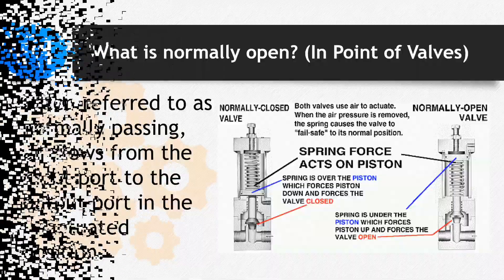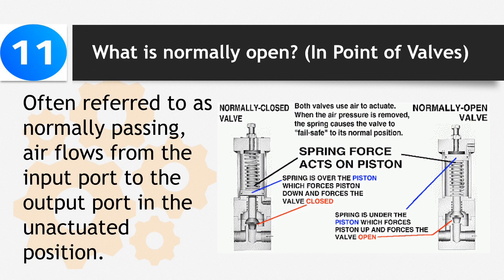Number 11: What is normally open? In point of valves, often referred to as normally passing, air flows from the input port to the output port in the unactuated position.